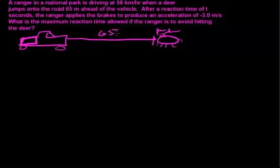The deer is 65, I believe, meters in front of him. Yeah, I should probably read this problem. The ranger in a national park is driving at 56 kilometers per hour when a deer jumps in the road 65 meters ahead of the vehicle. After a reaction time of t seconds, the ranger applies a brake to produce an acceleration of negative 3 meters per second.